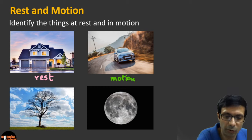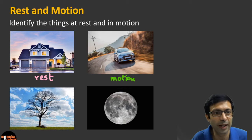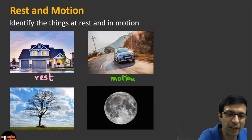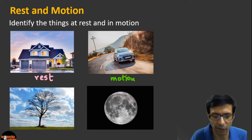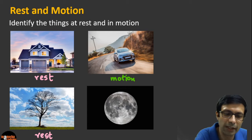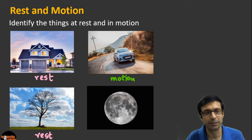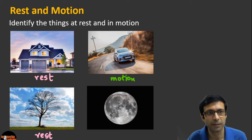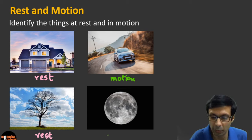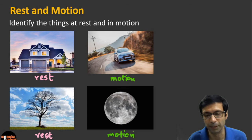What about the tree? Is it at rest or in motion? The answer is rest. And what about the moon? We know the moon is in motion because it is revolving around the earth — it goes around the earth. So the moon is in motion. You can see we can classify things as at rest and in motion.